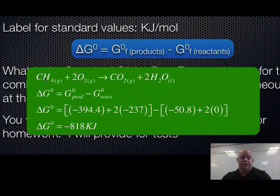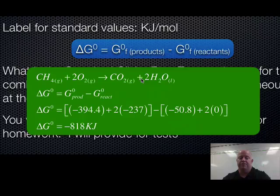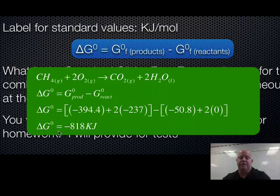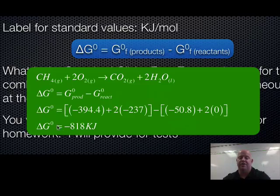Here's the balanced chemical equation and the calculation: ΔG = products minus reactants. Products give −394.4 kJ for CO₂ and −237 kJ × 2 for water. Subtracting reactants: methane is −50.8 kJ and oxygen is zero. Working through the math gives ΔG = negative 818 kilojoules.